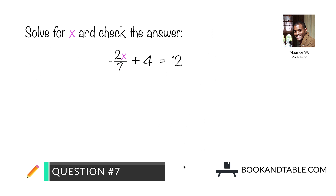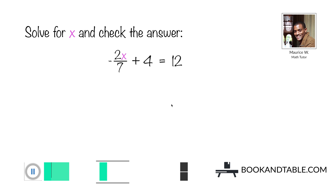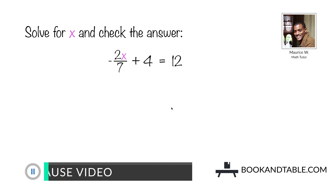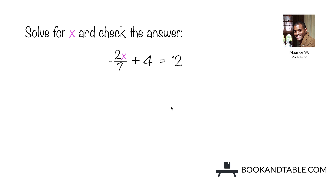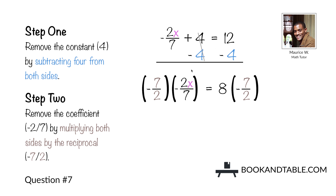Question number seven: solve for x and check the answer. Negative 2x divided by 7 plus 4 is equal to 12. Step one: remove the constant positive 4 by subtracting 4 from both sides. That leaves us with negative 2x over 7 on the left side and 12 minus 4, which is 8, on the right side.